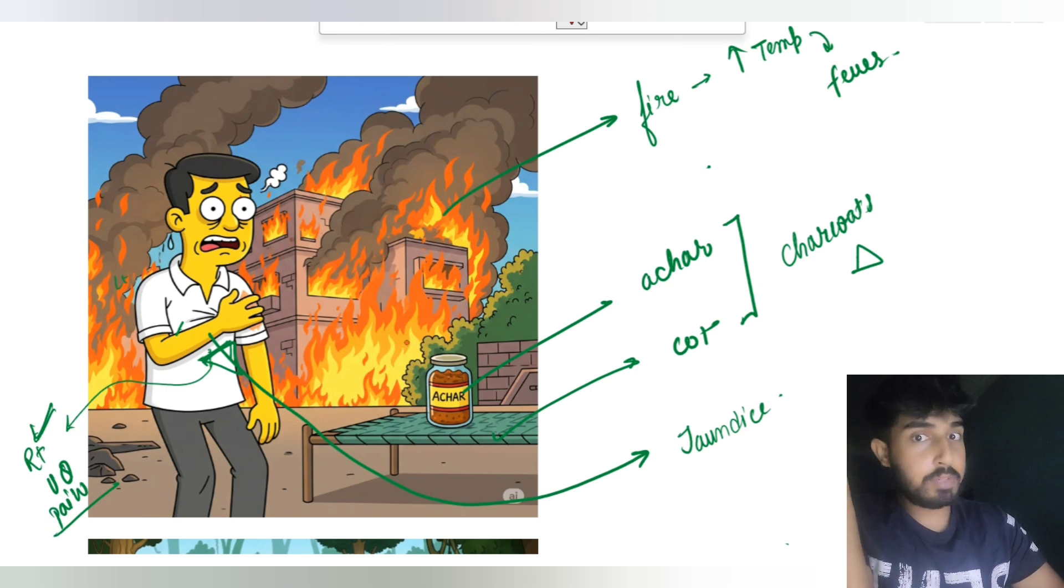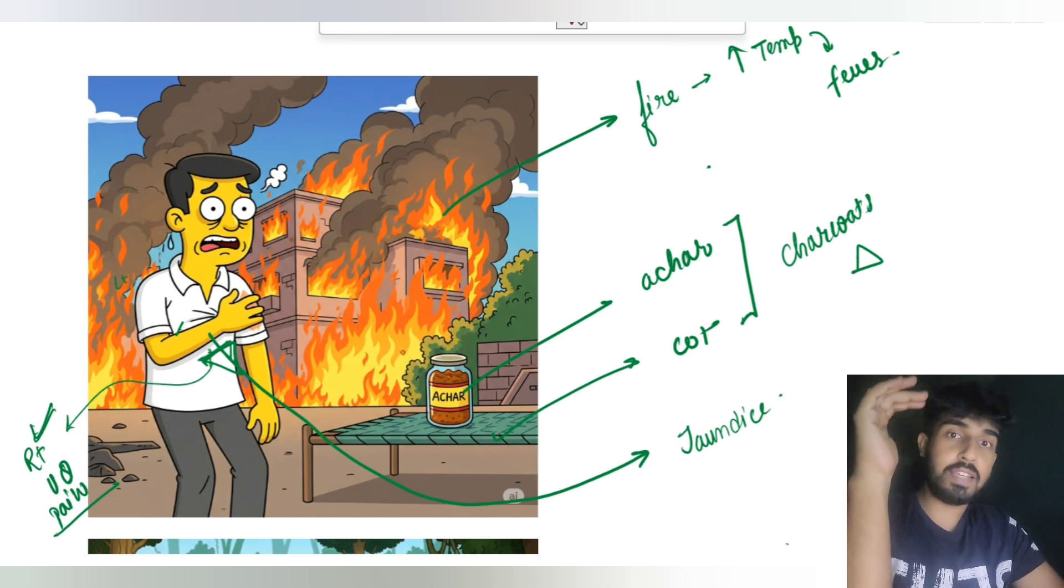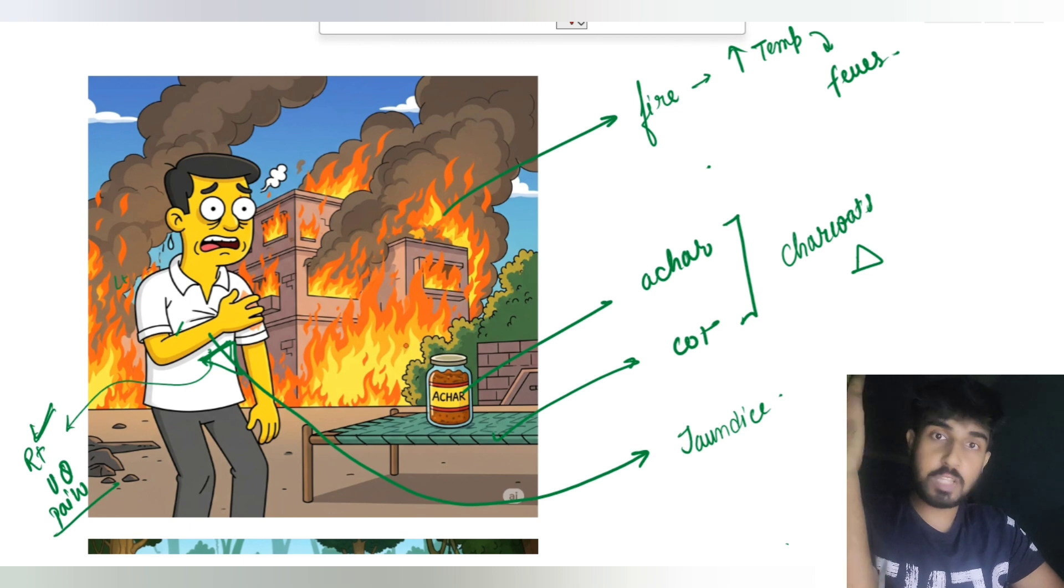Vomiting is a symptom, okay, but it is not in the Charcot's triad or Reynolds pentad, right, that we are going to discuss. So I just want you to hammer it so deep that you don't make a mistake. You don't commit a mistake.